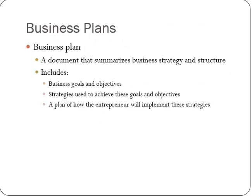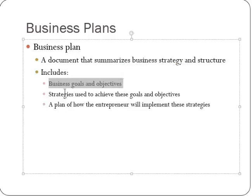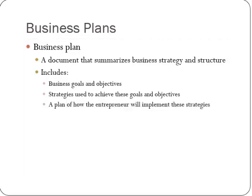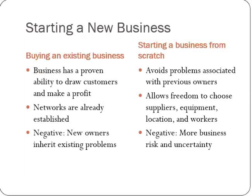A business plan is a fundamental component of any entrepreneurship — a document that summarizes the business strategy, including the goals and objectives, the strategies, and a plan on how the entrepreneur will implement them. That mirrors the three levels of decision-making: the strategic part, the tactical part, and the operational part. When starting a new business, you can either buy an existing business or start from scratch. Buying an existing business costs more and you inherit existing problems, but their networks, customer base, and proven track record are already established. Starting from scratch gives more freedom but comes with more risk and uncertainty.